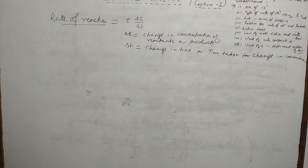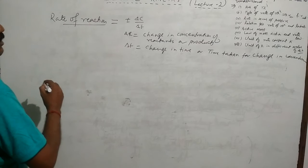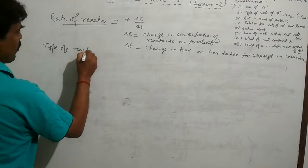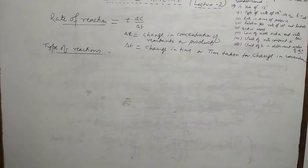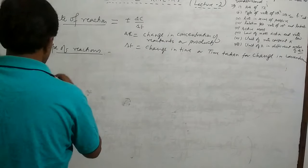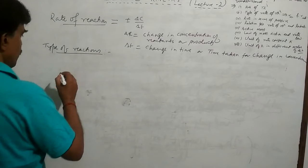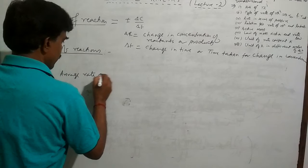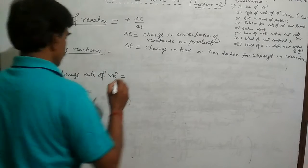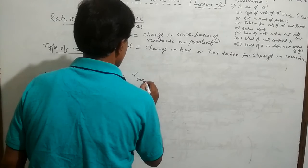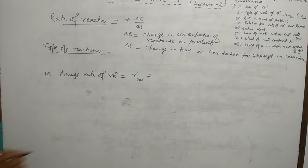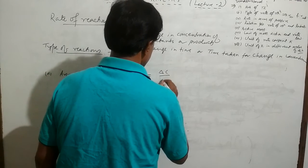Now I would like to discuss the types of rate of reaction. The first type is the average rate of reaction. This is equal to r average, and r average is equal to delta c by delta t.